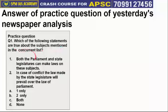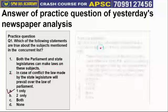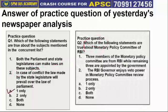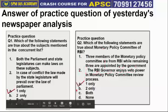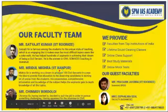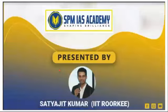Regarding question one on the concurrent list: both Parliament and state legislatures can make laws on concurrent list items, but if there is a conflict, Parliament's law will prevail. So statement two was wrong, and the correct answer is option A. For question two on the Monetary Policy Committee: the RBI Governor does not have veto power in the MPC, so statement two is again wrong, and the correct answer is option A — one only. That's all from our side for today. Thanks for watching.